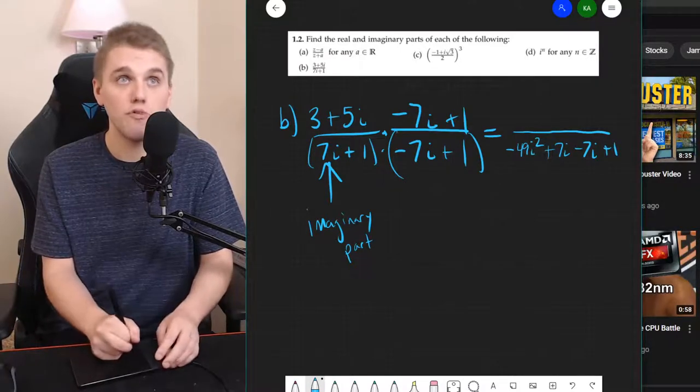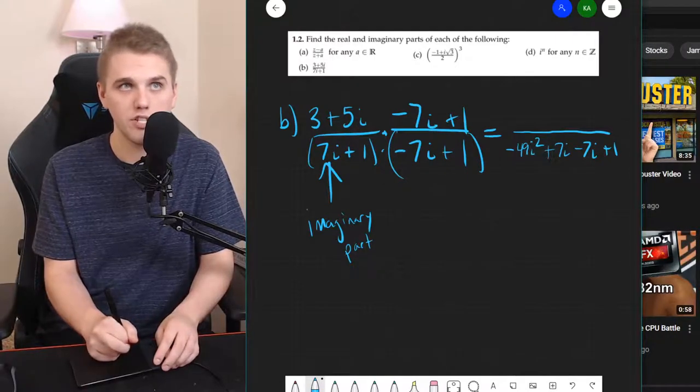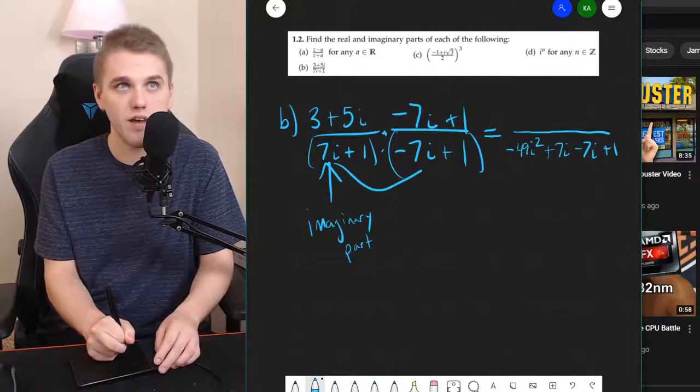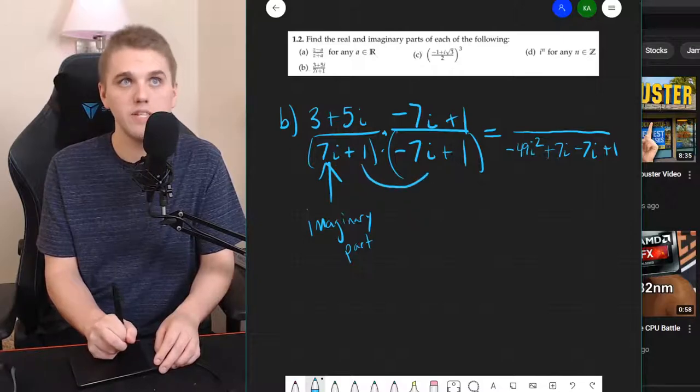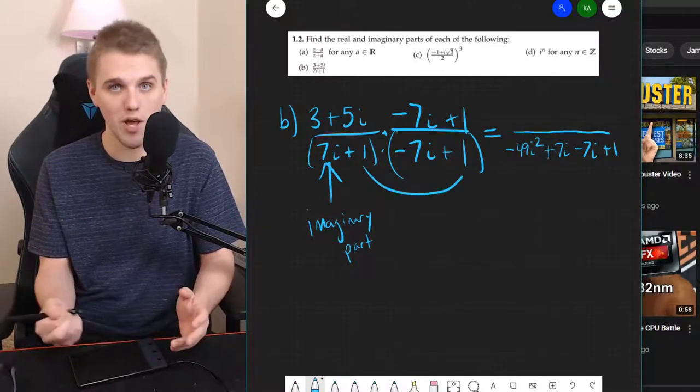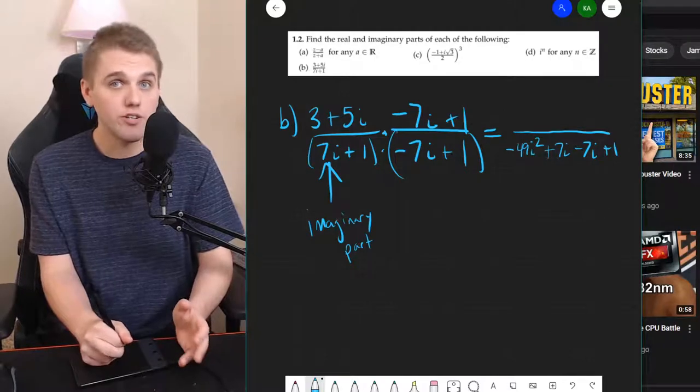So that's when you FOIL this multiplication. 7i times negative 7i. 7i times 1. 1 times negative 7i. And 1 times 1. We're going to multiply the numerators in the same way.